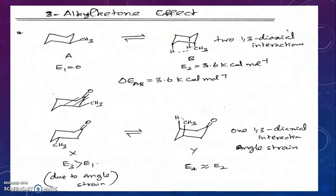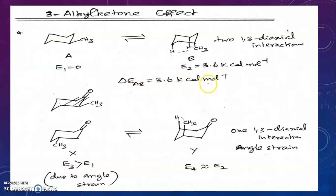The alkyl-ketone effect is also observed when a methyl group is introduced at the third position, giving the 3-alkyl-ketone effect. For methylcyclohexane, the equatorial isomer energy is 0 and the axial isomer energy is 3.6 kcal/mol, giving an energy difference of 3.6 kcal/mol.